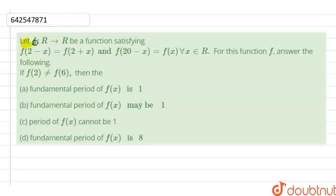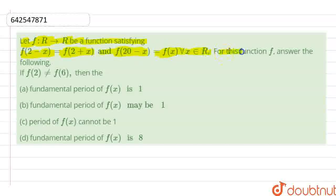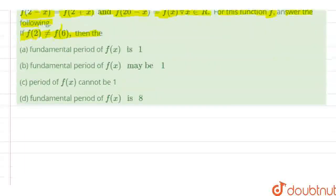The question is: let f: R to R be a function satisfying f(2 − x) = f(2 + x) and f(20 − x) = f(x) for all x belonging to R. For this f, answer the following: if f(2) is not equal to f(6), then we have to find the period of f.